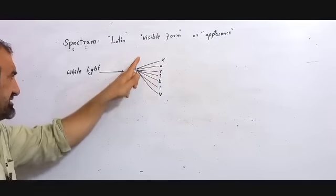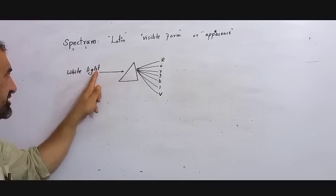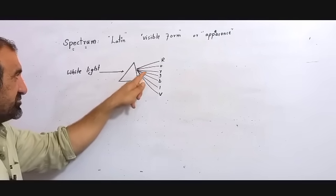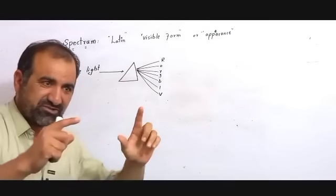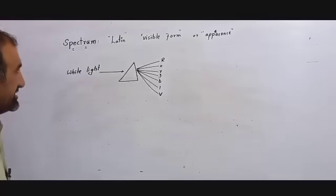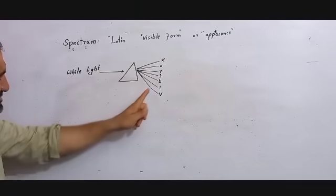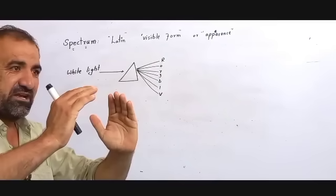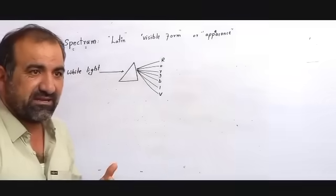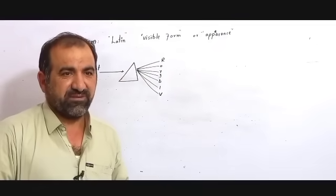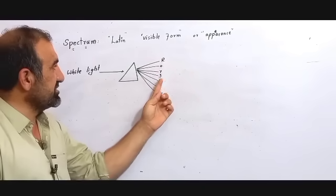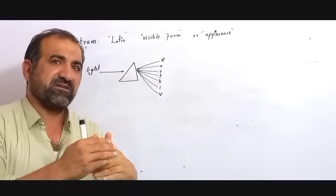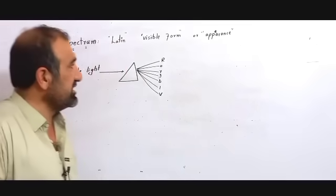The spectrum is defined as the arrangement of radiation in increasing or decreasing order of wavelength or frequency. This color band arrangement is called the spectrum.